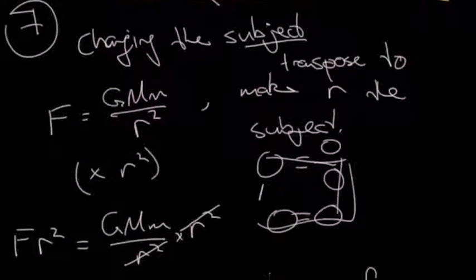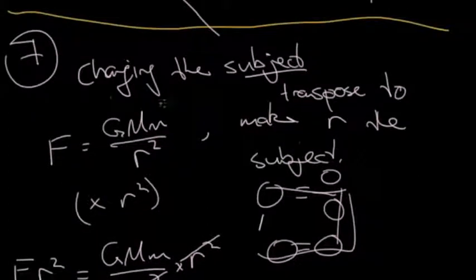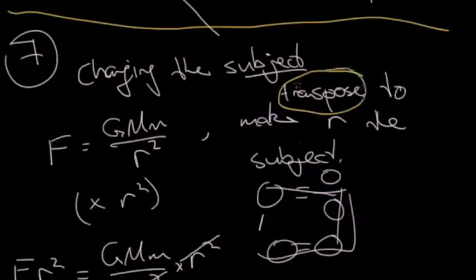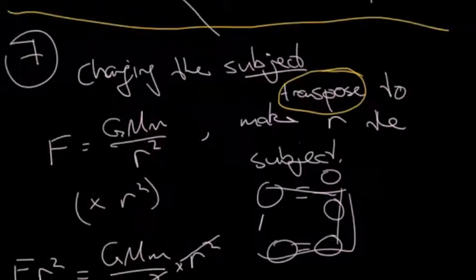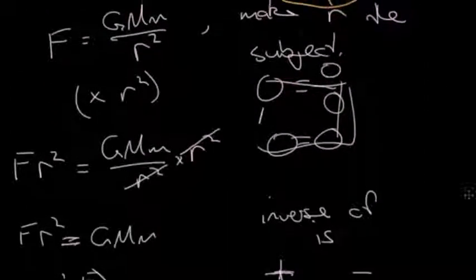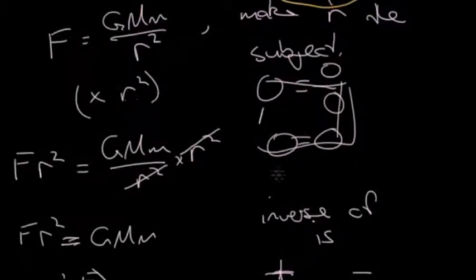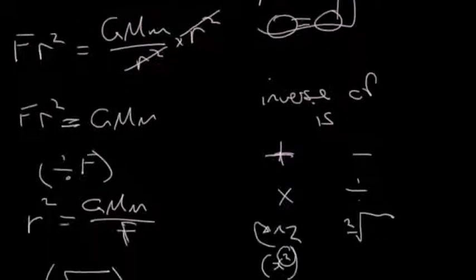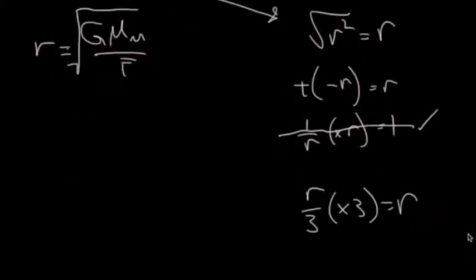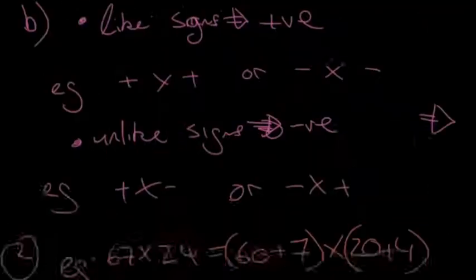Transposition. So what did we do there? The idea of transposition was to change the subject. And the subject was initially F. All we did was try to identify steps we could take to get the R by itself. And we managed to sort it out.